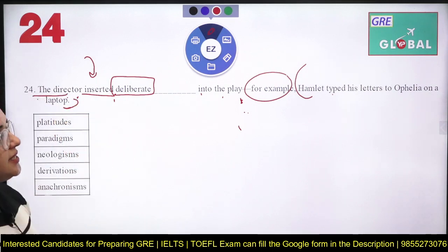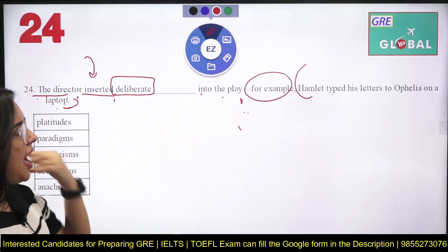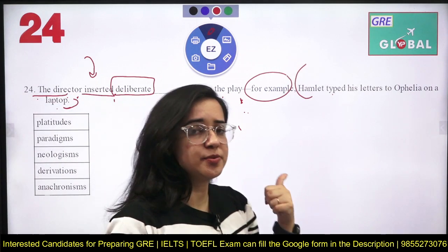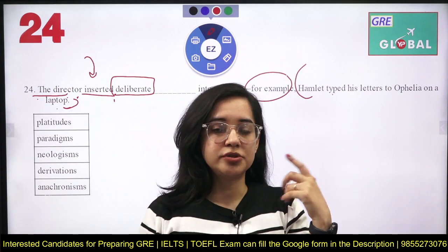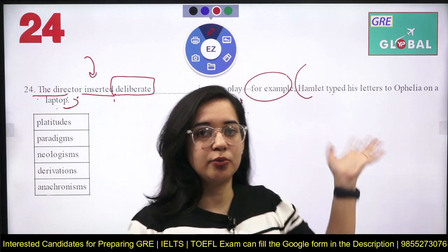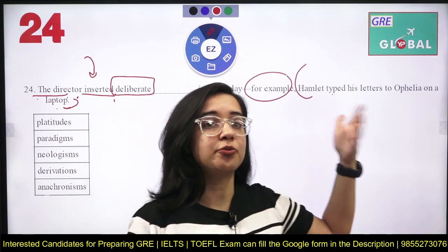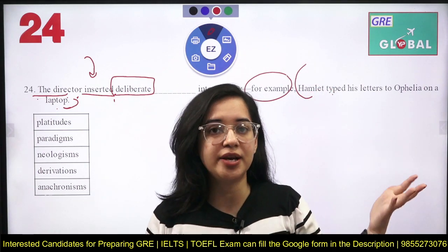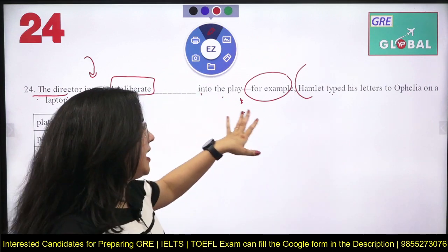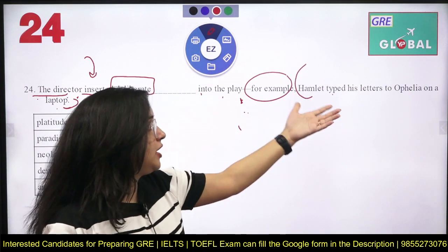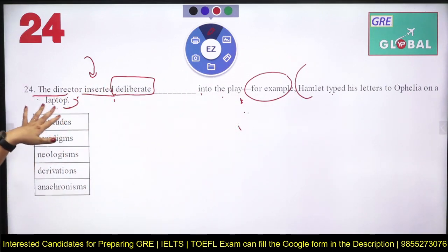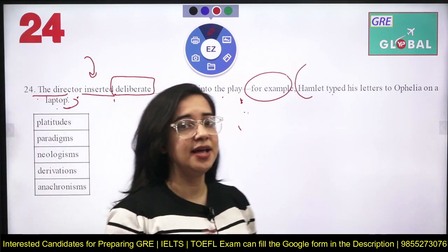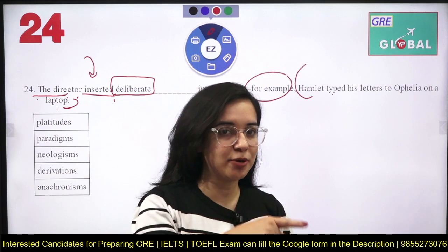The example is: 'Hamlet typed his letters to Ophelia on a laptop.' Now Hamlet is Shakespeare's play, approximately 16th century. Those who are aware about literature will know this play. So Hamlet wrote letters to Ophelia — but on a laptop? Ab ispe kya gadbad lag rahi hai — letters likhi hain laptop pe, lekin kya us time pe laptop tha?